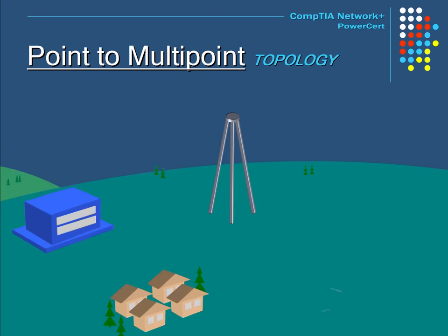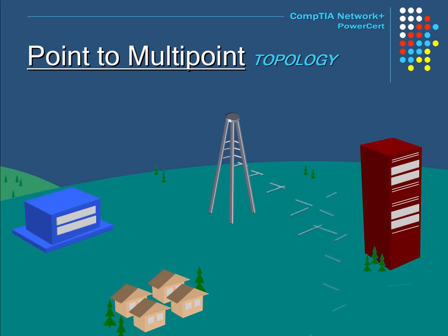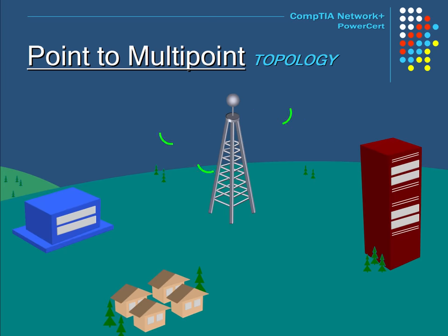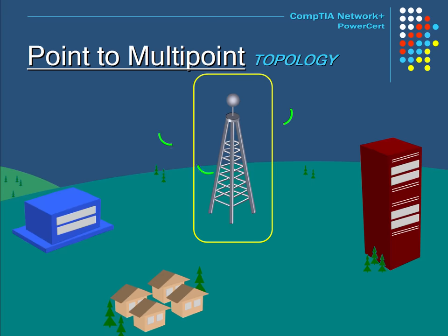Point-to-multipoint topology is a network architecture commonly used in wireless outdoor networks. There is a central wireless base station, and other wireless locations around it connect to that single central location. These other locations do not directly communicate with each other — they all only communicate to the central location. These wireless locations are commonly called clients, and the central location is called an access point or a base station.